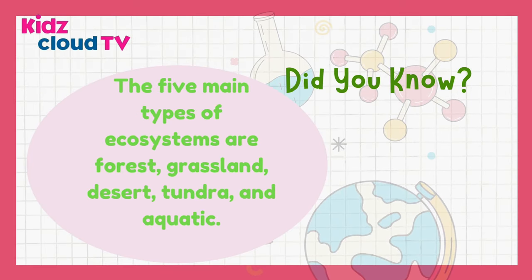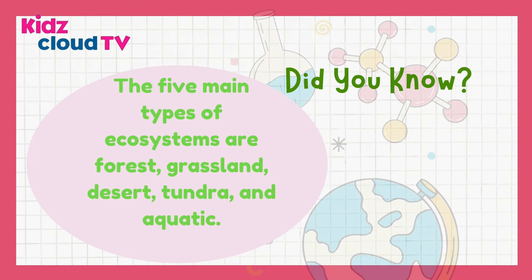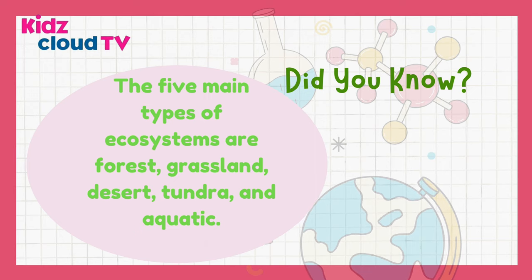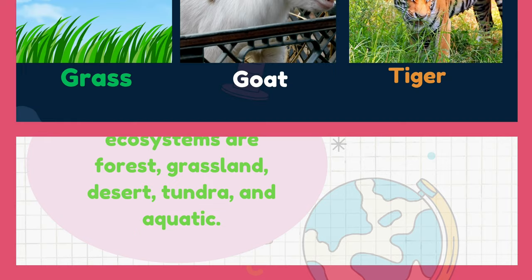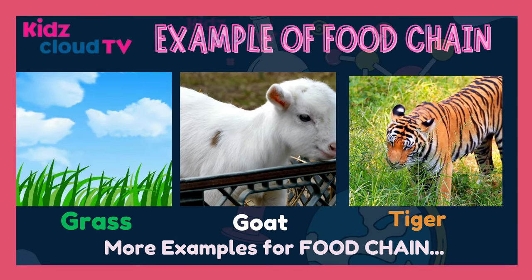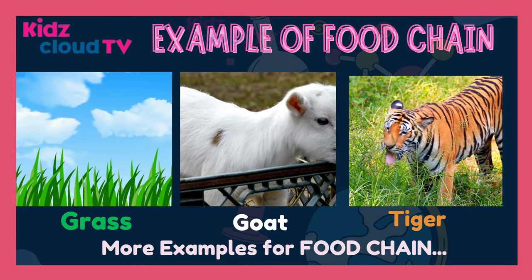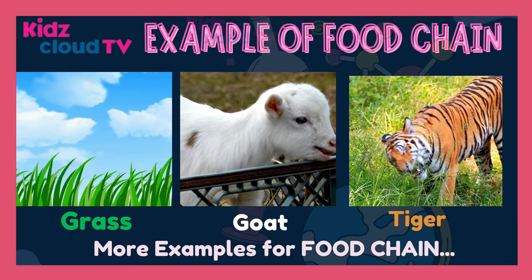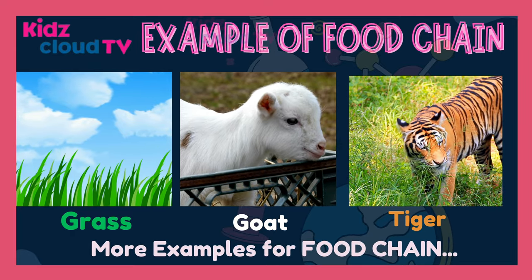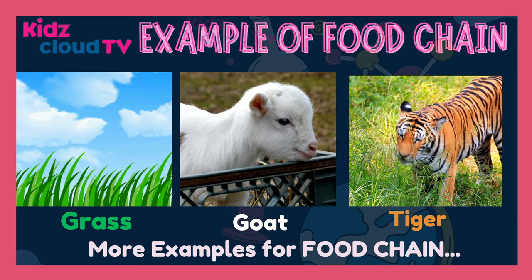Did you know? There are five main types of ecosystems: forest, grassland, desert, tundra, and aquatic. More examples of a food chain: grass is eaten by sheep, and sheep are hunted by tigers.